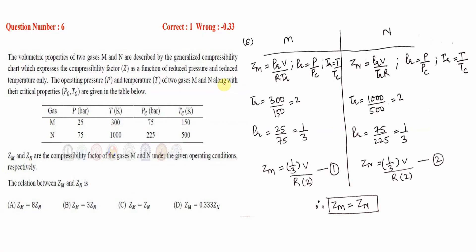This question is the application of the theorem of corresponding states, which states that all fluids when compared at the same reduced temperature and reduced pressure will have the same compressibility factor and will deviate from ideality. Reduced pressure is P by Pc where Pc is the critical pressure, and reduced temperature is T by Tc which is the critical temperature.